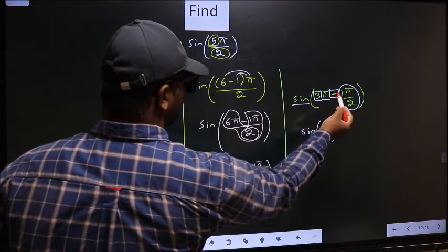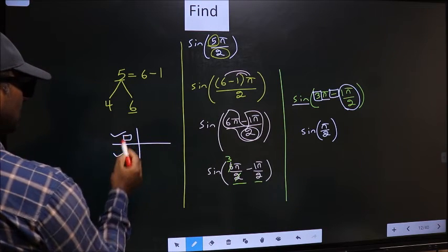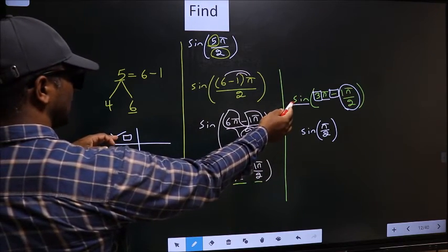Here we have negative. That means the angle lies in the second quadrant. And in the second quadrant sine is positive.